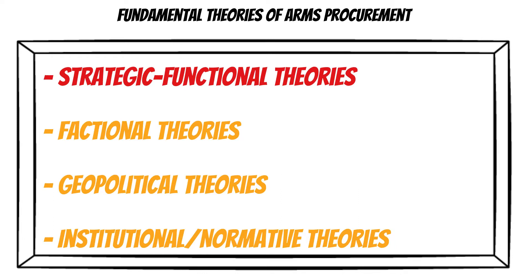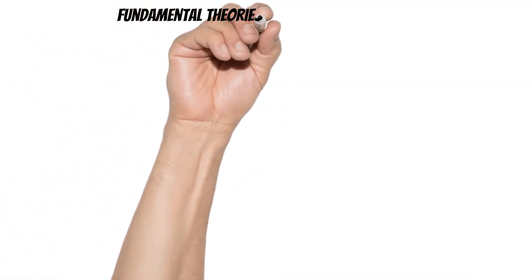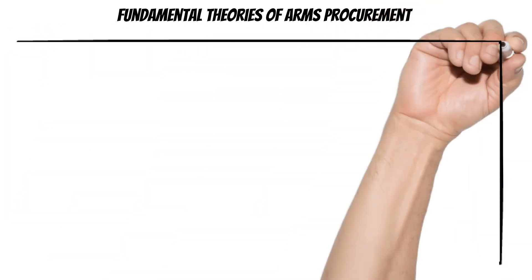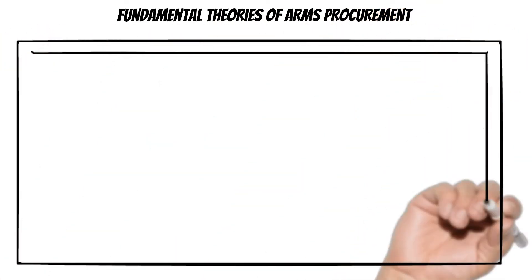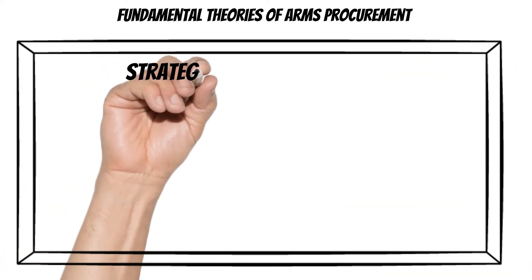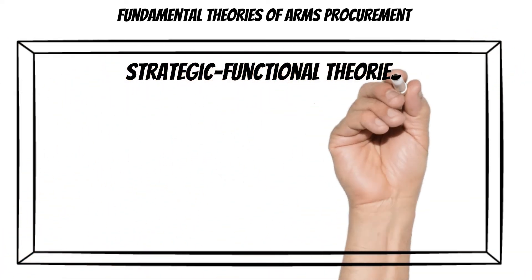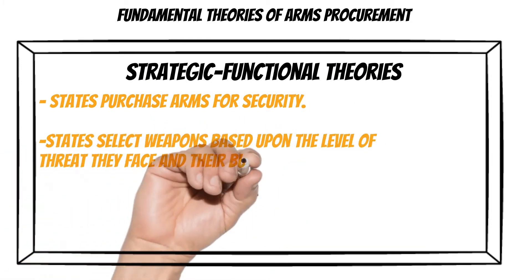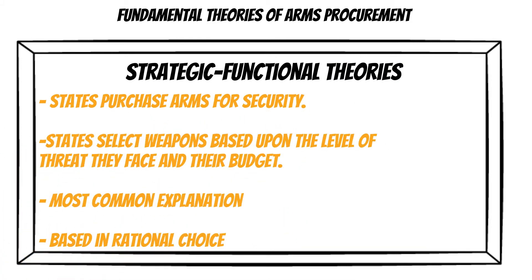Let's dive right into the strategic functional theories and how they explain why states decide to procure arms. Strategic functional theories of arms procurement behavior are by far the most common theories that try to explain arms procurement behavior. The majority of international relations literature, especially within the realist scholarship, tends to center around strategic functional approaches to arms procurement. The reason for that is strategic functional approaches are nested within rational choice theory.